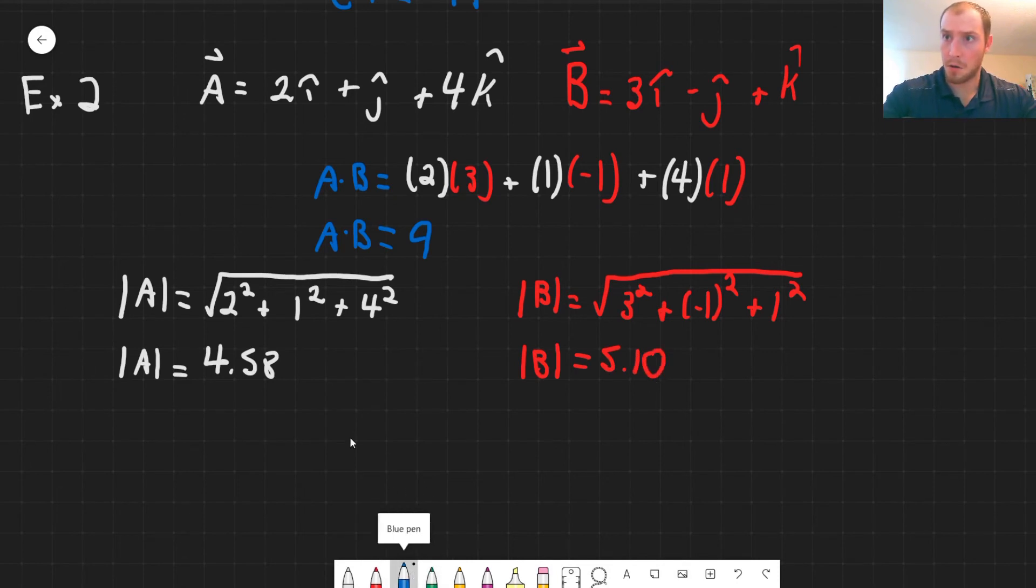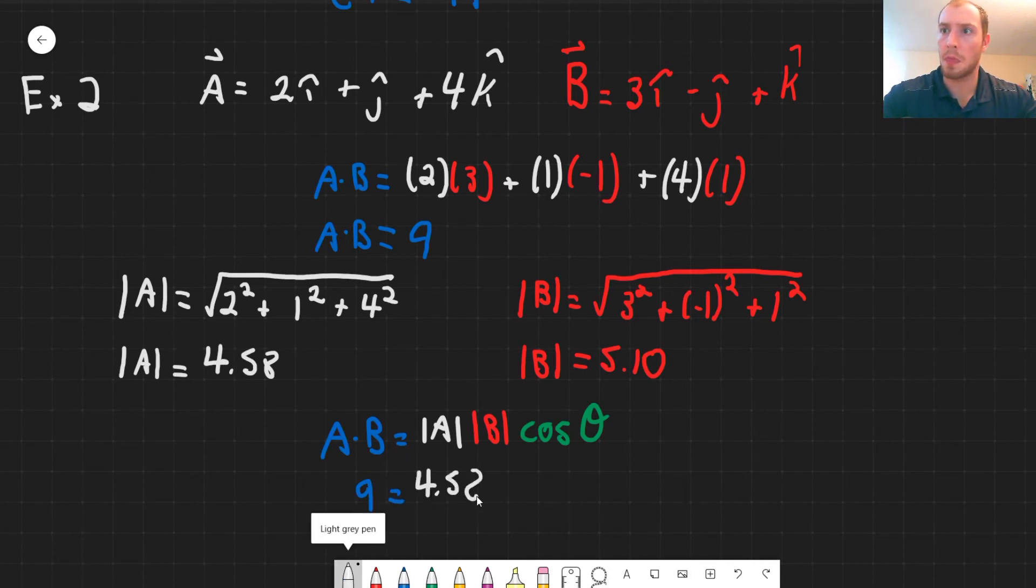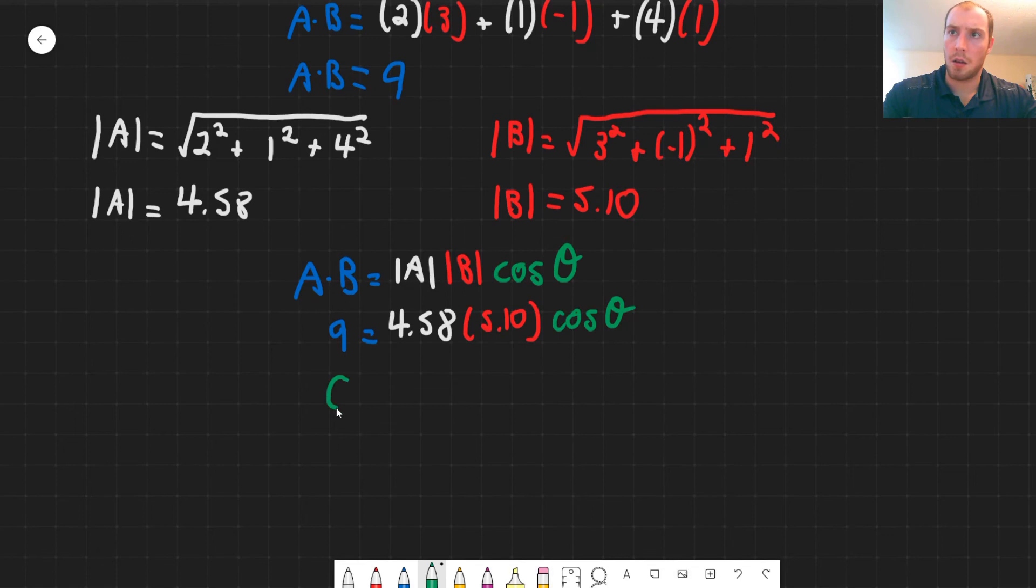And now we have the expression A dot B is equal to the magnitude of A multiplied by the magnitude of B times cosine theta. So now substituting our expressions in, we have 9 is equal to 4.58 multiplied by 5.10, and then we're solving for theta. And we get theta is equal to 67.3 degrees.